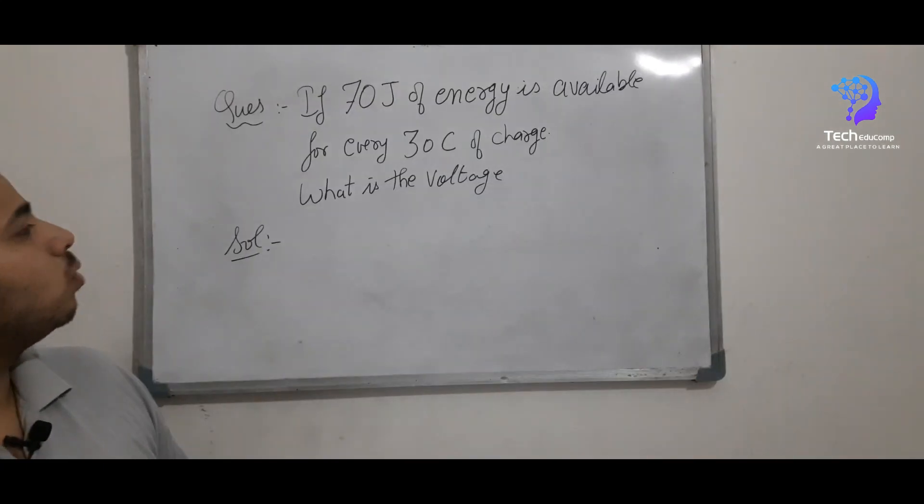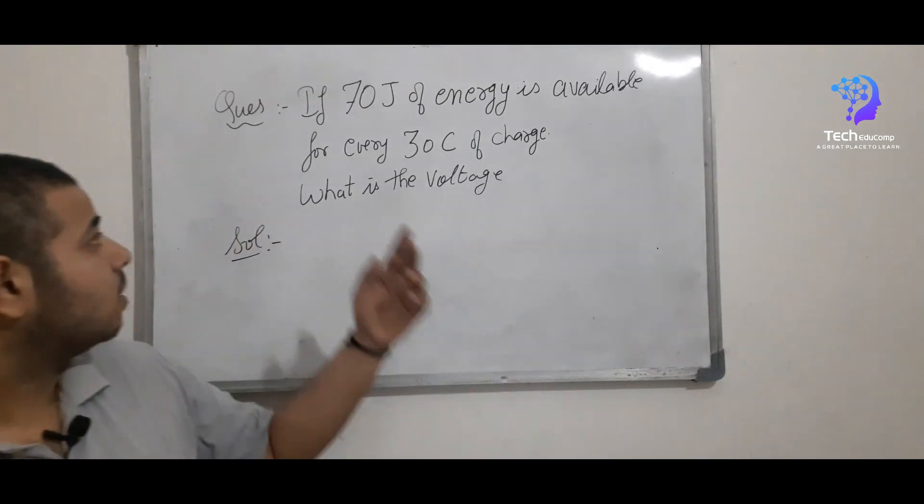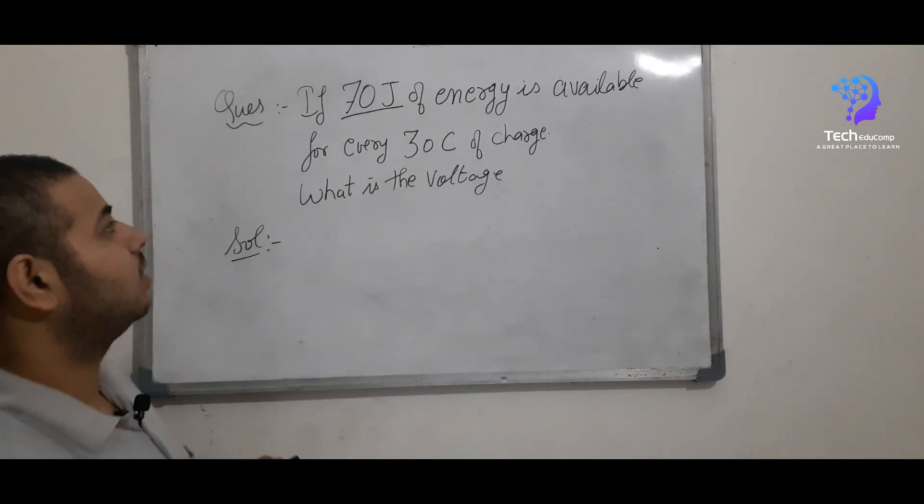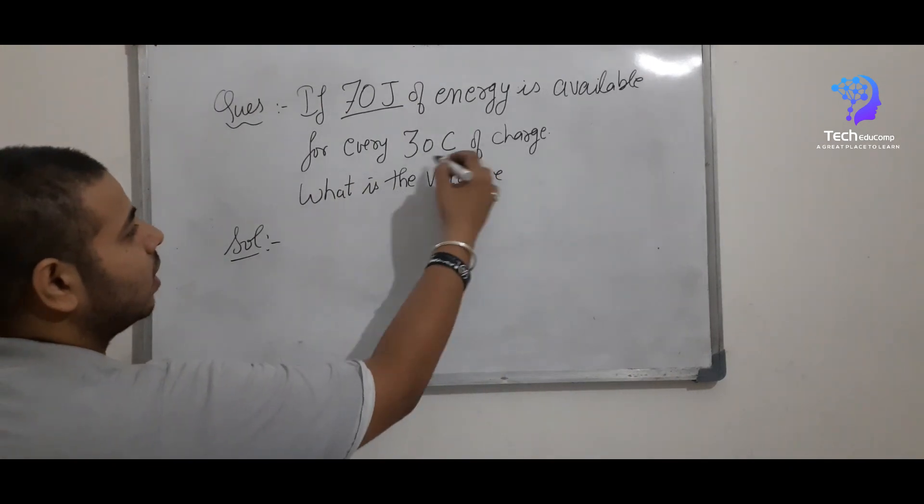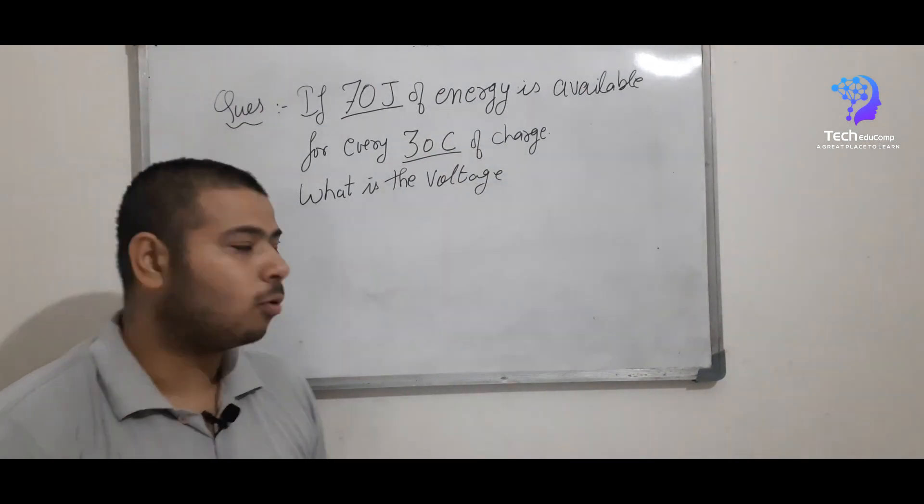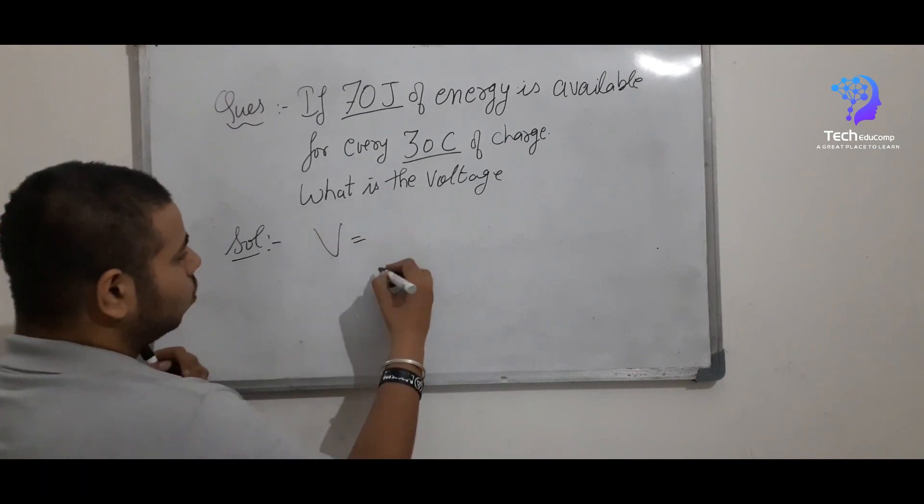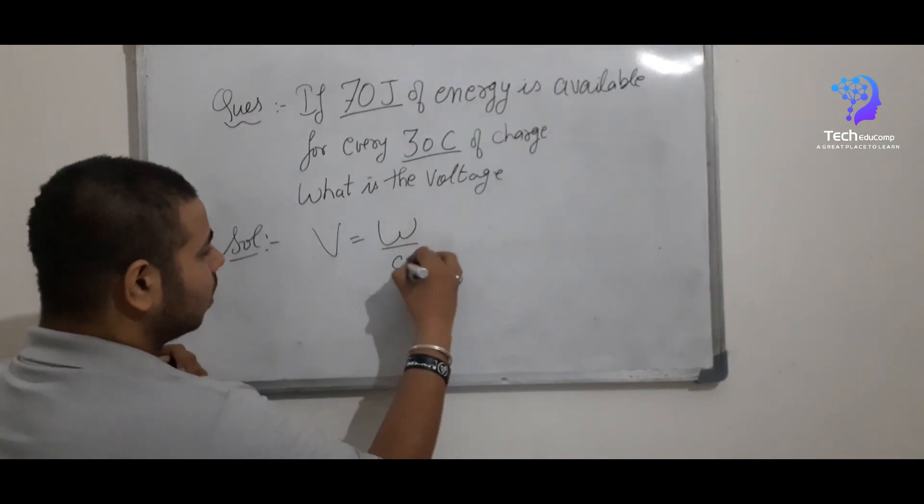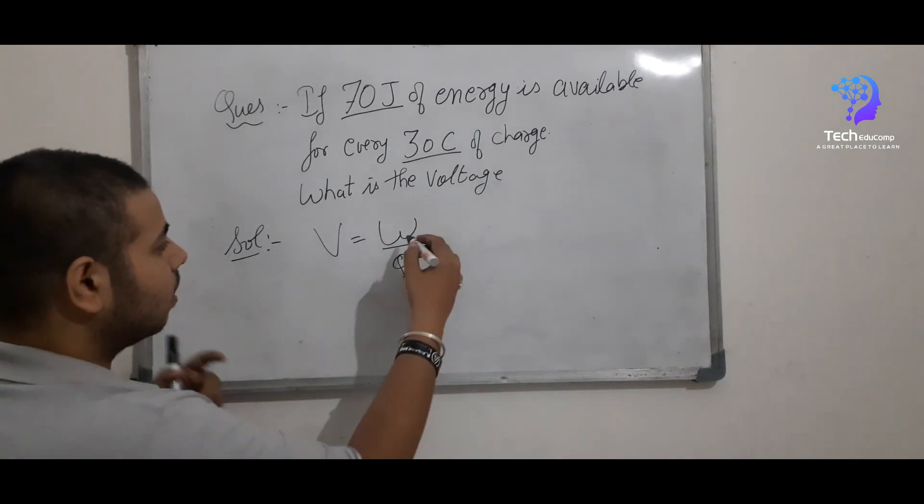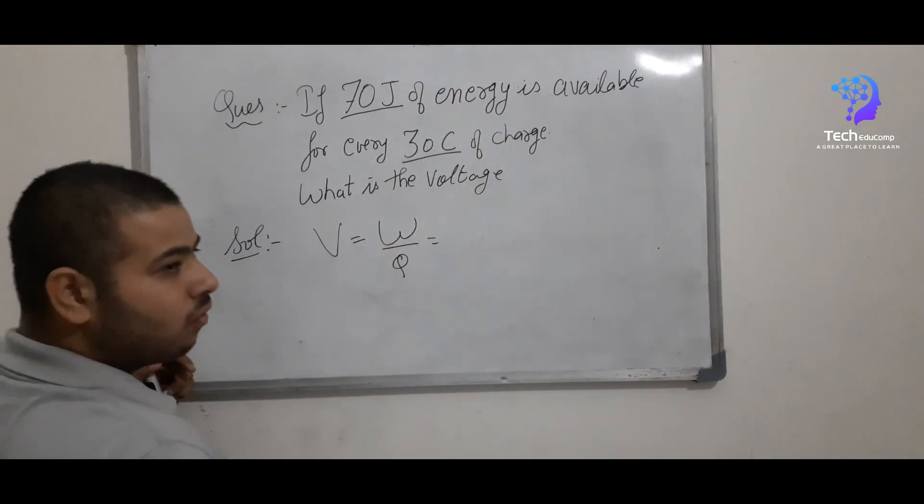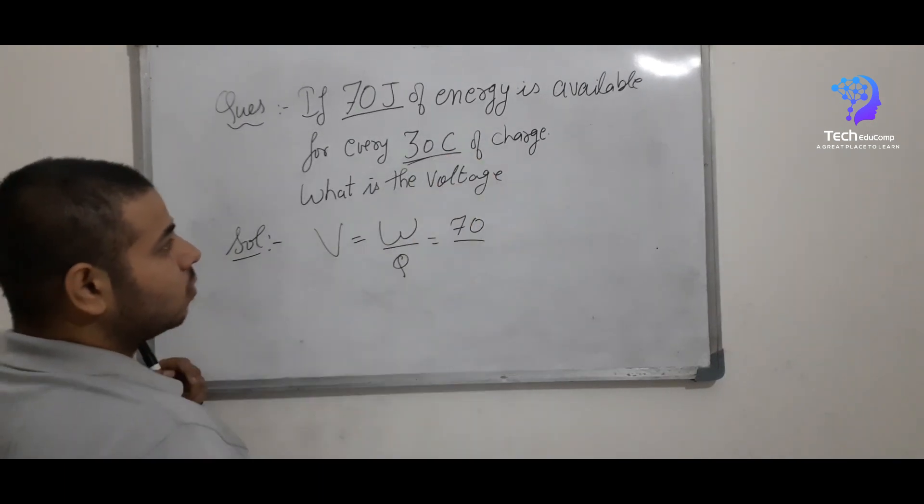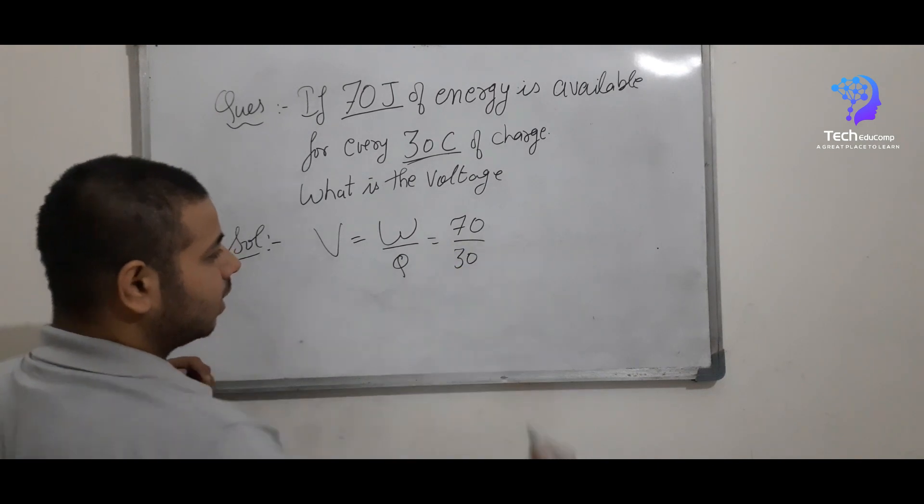So we have two things here and we have to find the third one. What are two things here? One is energy, 70 J of energy, and what is the value of charge? 30 C. So I have already told you the formula for this. It is capital V equal to W by Q. So we know the value of these two. W equal to energy or work done which is 70 and charge is 30 C. So we can write it here.